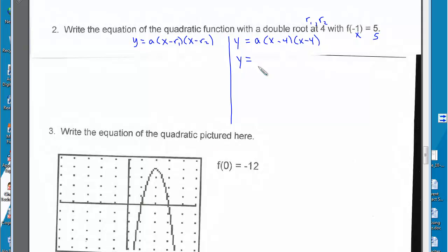I just need to define what a is. So let's plug in what we know. y is 5, a we do not know, x is negative 1, minus 4.